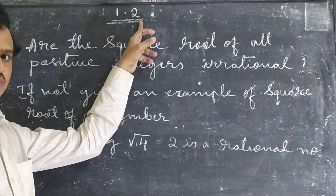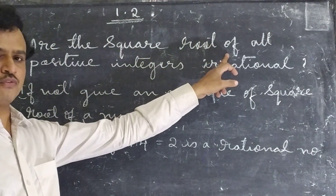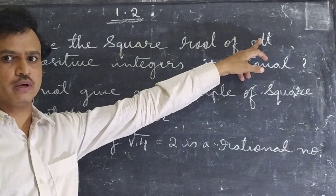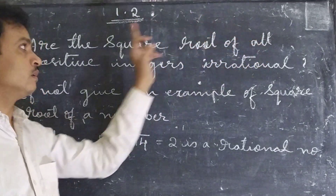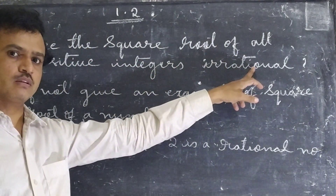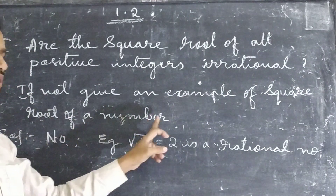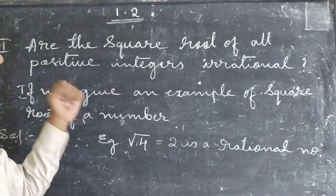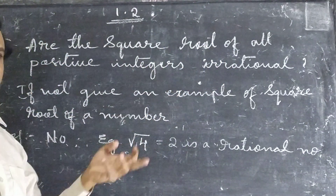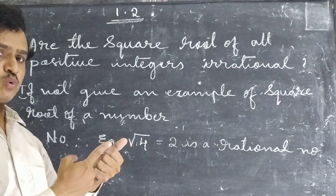Exercise 1.2, second main question: Are the square roots of all positive integers irrational? This point you have to keep in your mind — all is mentioned there. Are the square roots of all positive integers irrational? We will take square root 2, square root 3, square root 4, square root 5, etc.